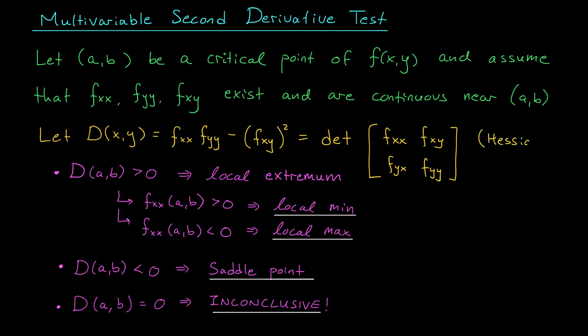Now, you might be wondering, Zach, why do we have an fxy term in our matrix, but we don't have an fyx term over here? Well, we sort of do. Remember, since our derivatives exist and are continuous near (a,b), Clairaut's theorem says that fxy is really the same as fyx. Thanks, Clairaut.